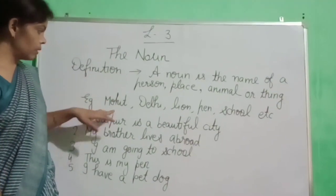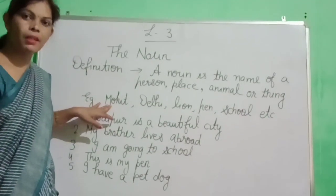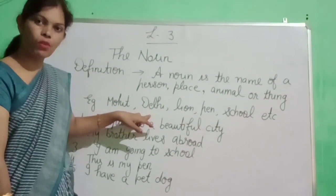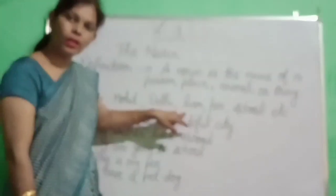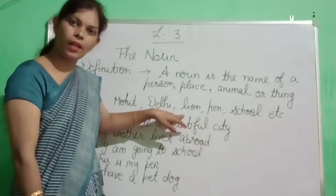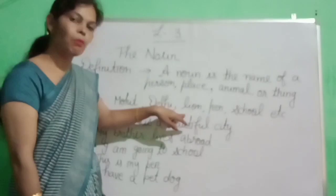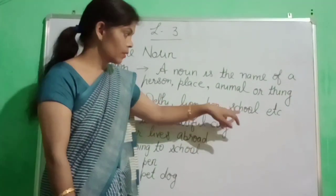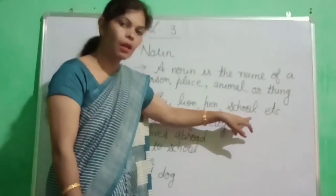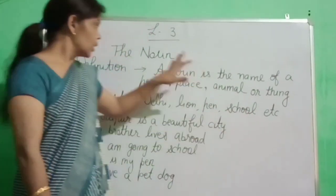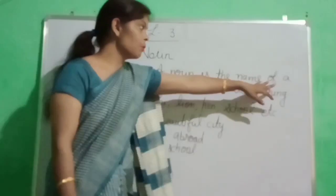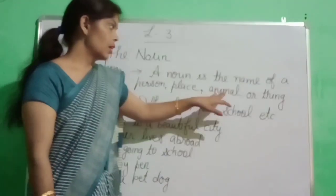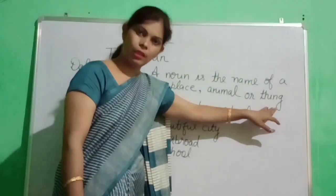Example: Mohit — Mohit name hai na kisi ka? Very good. Delhi — Delhi is the name of a place. Lion — lion is the name of an animal. Pen is the name of a thing. School — school kya aapka? Place. So noun is the name of a person, place, animal or thing.